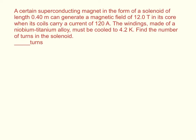First of all, it gives us way more information than we need, so we don't really need all of that to solve the theoretical part. We're going to use the same equation from problem 13: the magnetic field is equal to the permeability of free space times the number of turns divided by the length, times the current.